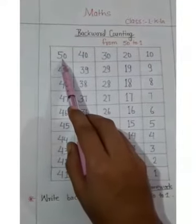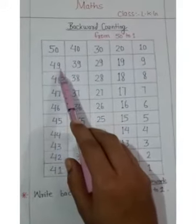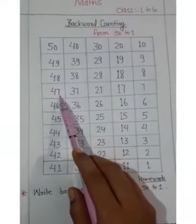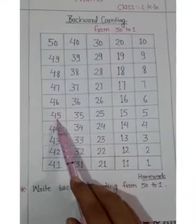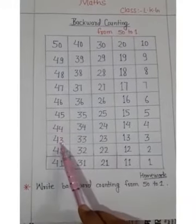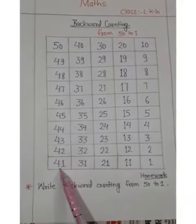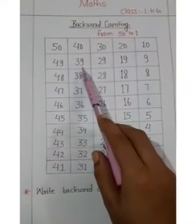Repeat again children. 50, 49, 48, 47, 46, 45, 44, 43, 42, 41, 40, 39.